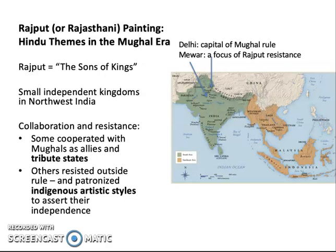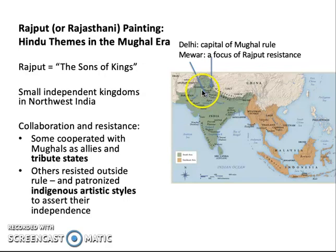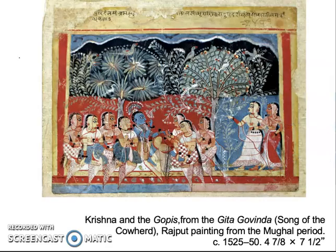Mughal painting is not the whole story of painting in South Asia at this time. We turn to another branch known as Rajput or Rajasthani painting. Rajput, meaning the sons of kings, refers to the small independent kingdoms in northwest India around where the Mughal rulers were established. These various kingdoms had different policies of collaboration and resistance — some Hindu kingdoms cooperated with the Mughals, while others resisted Mughal Islamic rule and patronized indigenous artistic styles.